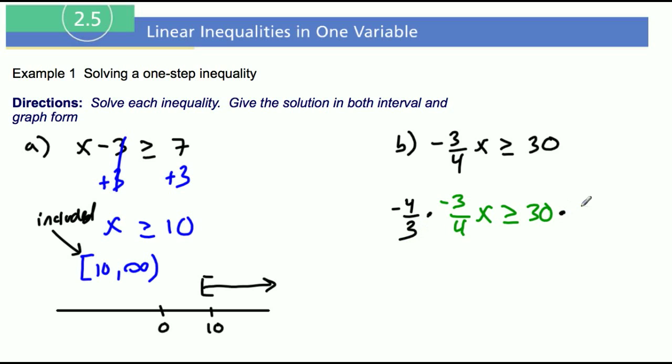I'm going to multiply both sides by its reciprocal, negative four-thirds. What happens is the fours cancel and the threes cancel, so those are all gone and we're left with just x.